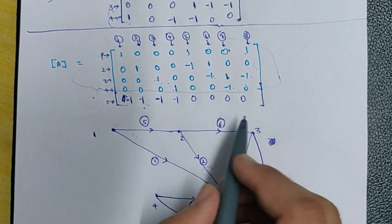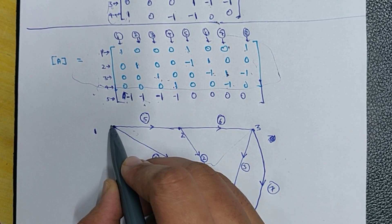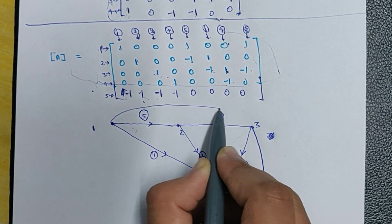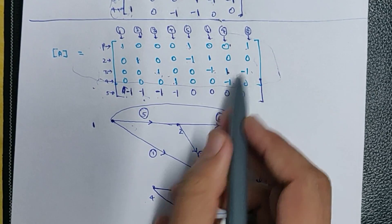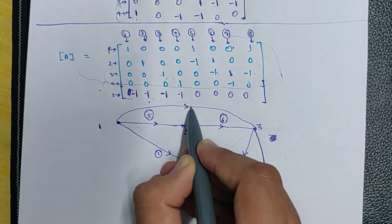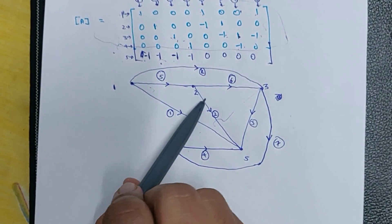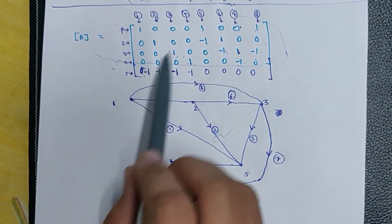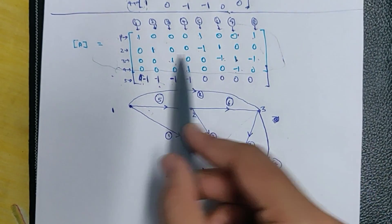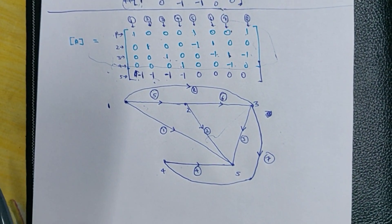It is flowing from node 1 to node 3, like this. This is the eighth branch. So this is the complete directed graph of this incidence matrix which was given to us.